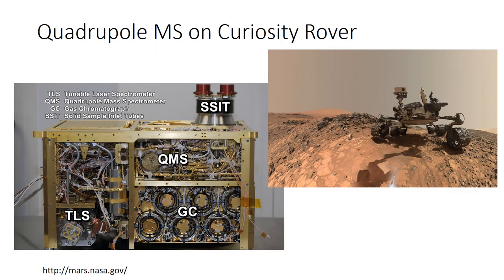Quadrupole mass spectrometry is so stable and reliable that it is the type of instrument placed on the Curiosity Mars Rover. Inside Curiosity there is an analytical chemistry module, and within that module is a small quadrupole mass spectrometer.